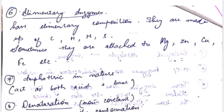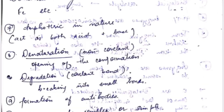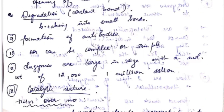Enzymes are amphoteric in nature, meaning they act as both acid and base. Another property is denaturation, which means the opening of the conformation, and degradation, which means breaking into smaller bonds. Enzymes also help in the formation of antibodies, and they can be complex or simple.